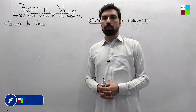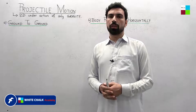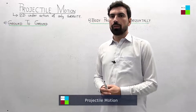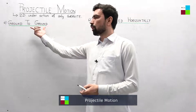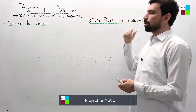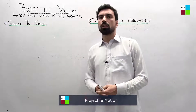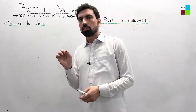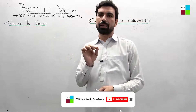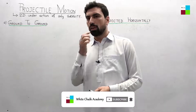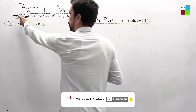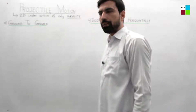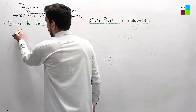Hi dear students, my name is Muhammad Nasser, you are watching me on Wild Chalk Academy. Today I will be speaking about projectile motion, and especially I will focus on the ground-to-ground projectile and the body projected horizontally. First of all, let me define what projectile motion is: if after the initial force the only force acting on the body is gravity, such a motion is called projectile motion. So projectile motion is actually a two-dimensional motion under the action of only one force, and that is gravity.